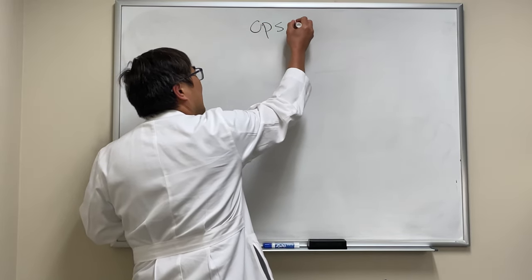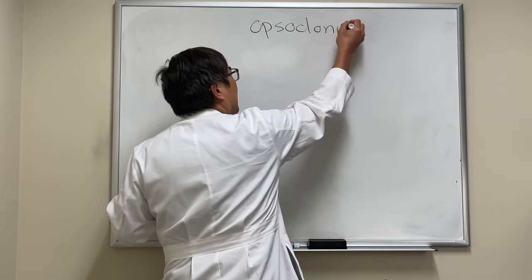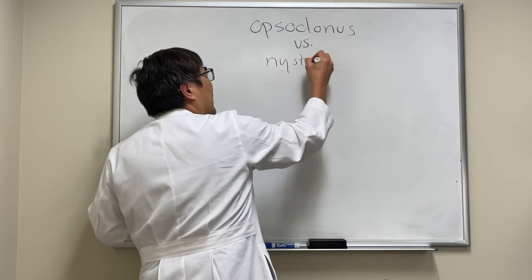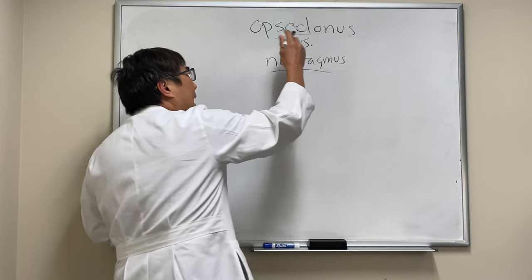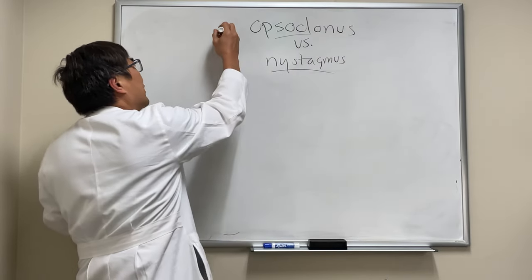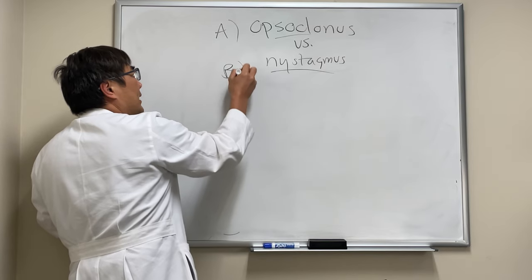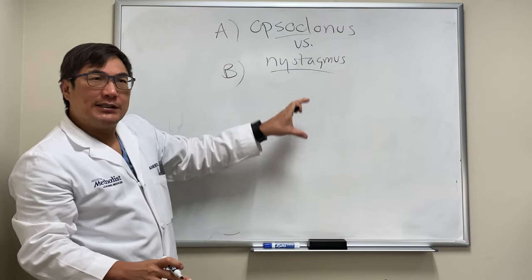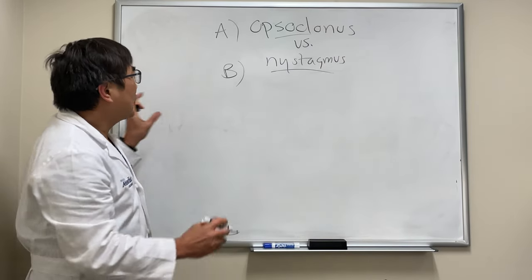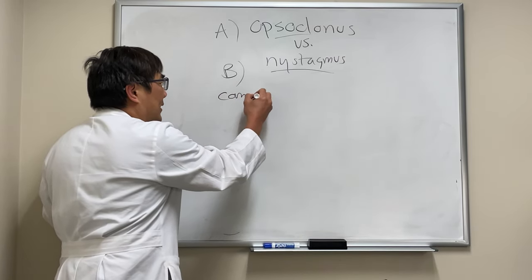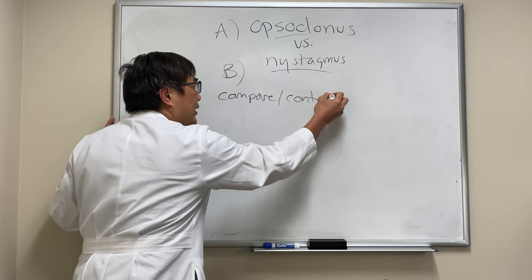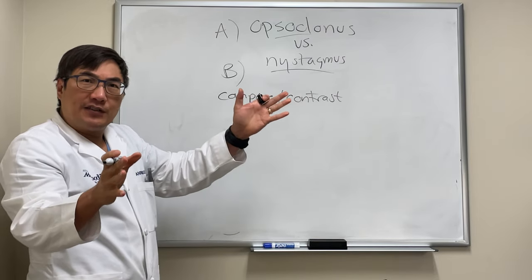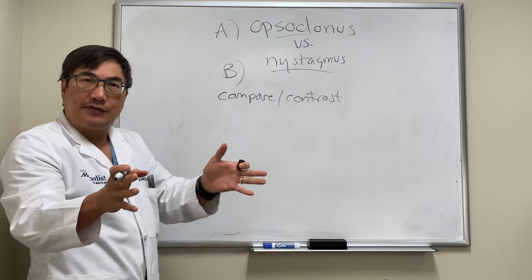Somebody asked: what is the difference and how do you tell opsoclonus versus nystagmus? In any compare and contrast between two things, A and B, it's useful to say what's similar and then what's different. That's what we use in our clinic as a compare and contrast method — find commonality first and then show what's different.